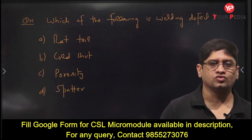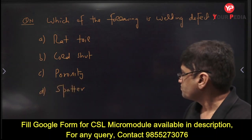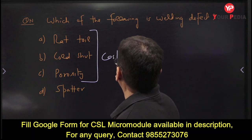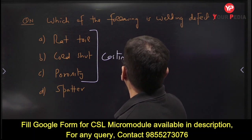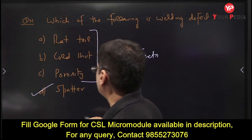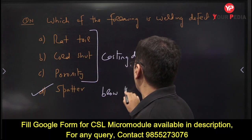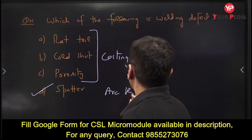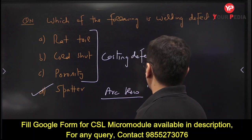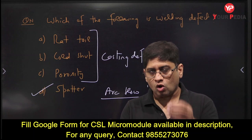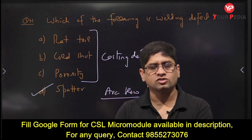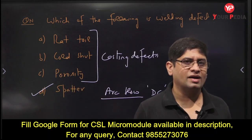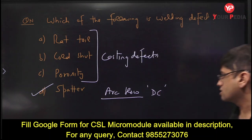Do not confuse casting defects with welding defects — they are two different things. Casting defects include rat tail, cold shot, and porosity. These are important casting defects to remember. Spattering in welding is caused by the arc blow phenomenon.